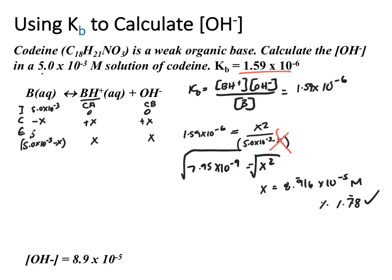Now they've asked us to calculate our hydroxide ion concentration. If we go back to our ice table, we notice that X equals the hydroxide ion concentration. So X gives us 8.9×10⁻⁵ molar, which is our hydroxide ion concentration. We could then use this to calculate pH or pOH depending on what else they ask.